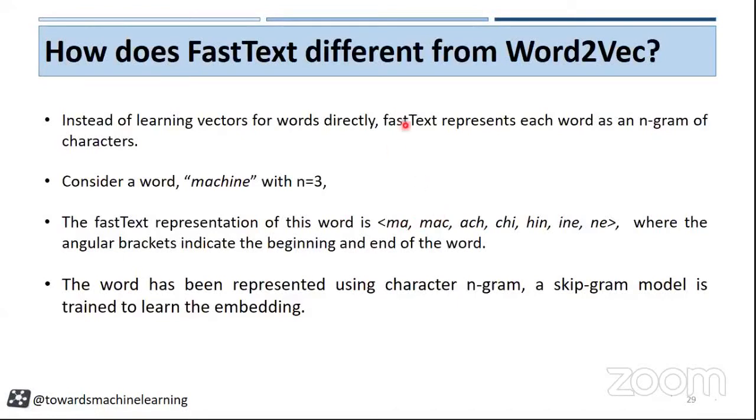In the Word2Vec model, if we see the skip-gram model, we are feeding a center word to the model and it is going to predict the context. So basically it is working on words.